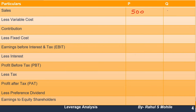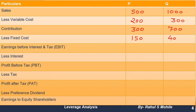Now let me fill in the format directly. Sales for P is 500 and for Q is 1000. Variable Cost for P is 200 and for Q is 300. So Contribution: 500 minus 200 equals 300 for P, and 1000 minus 300 equals 700 for Q. Fixed Cost is 150 for P and 400 for Q. So EBIT: 300 minus 150 equals 150 for P, and 700 minus 400 equals 300 for Q.